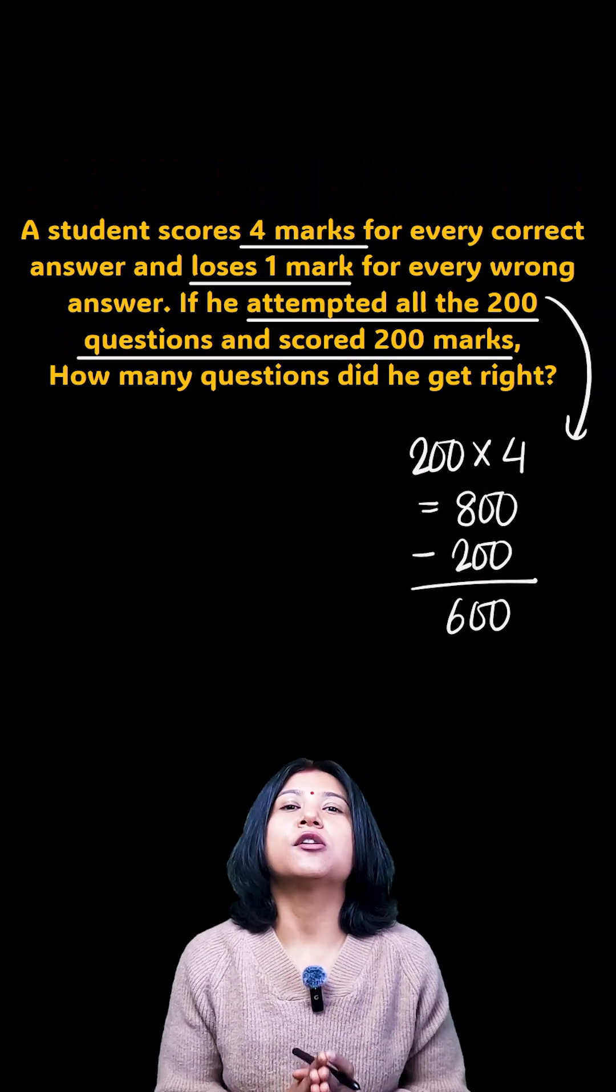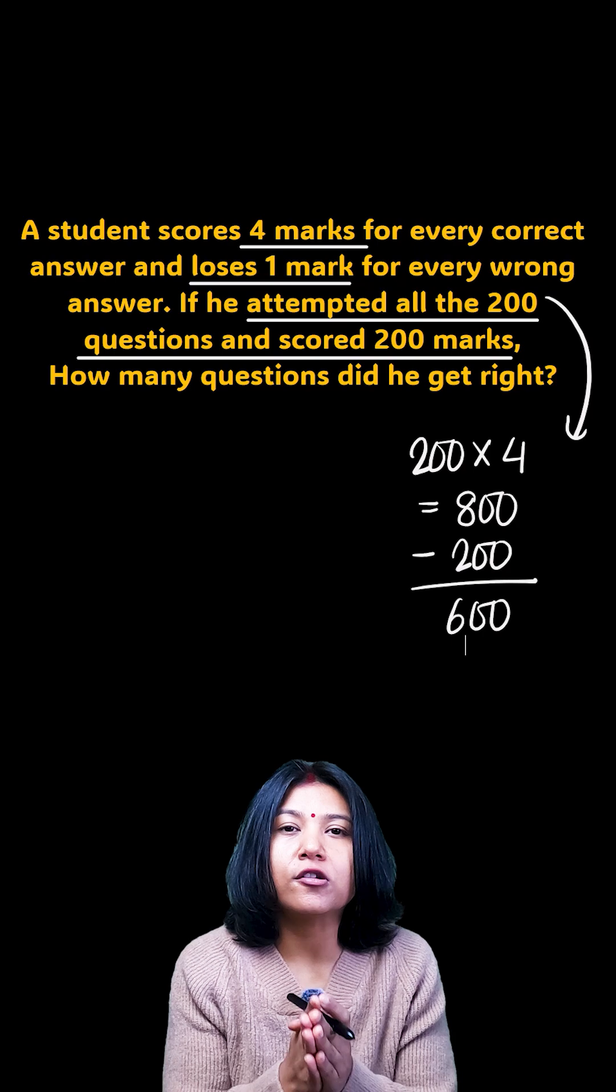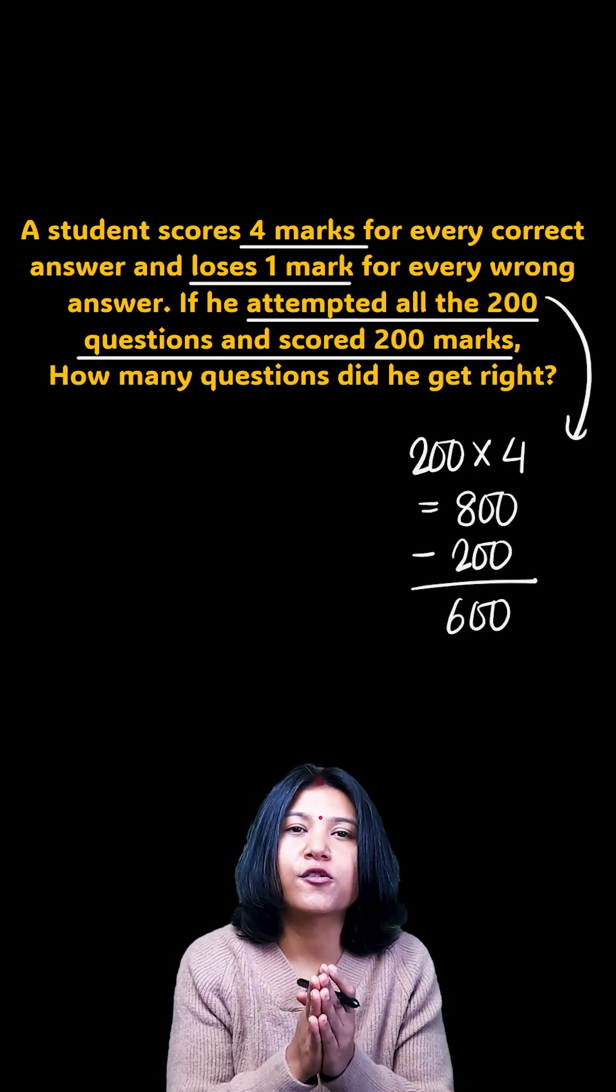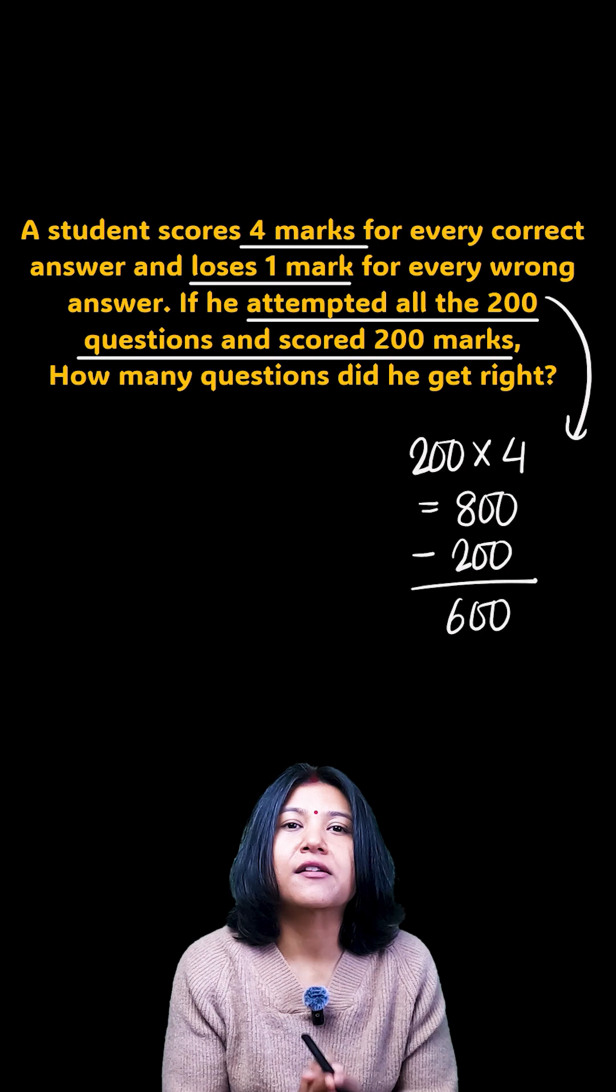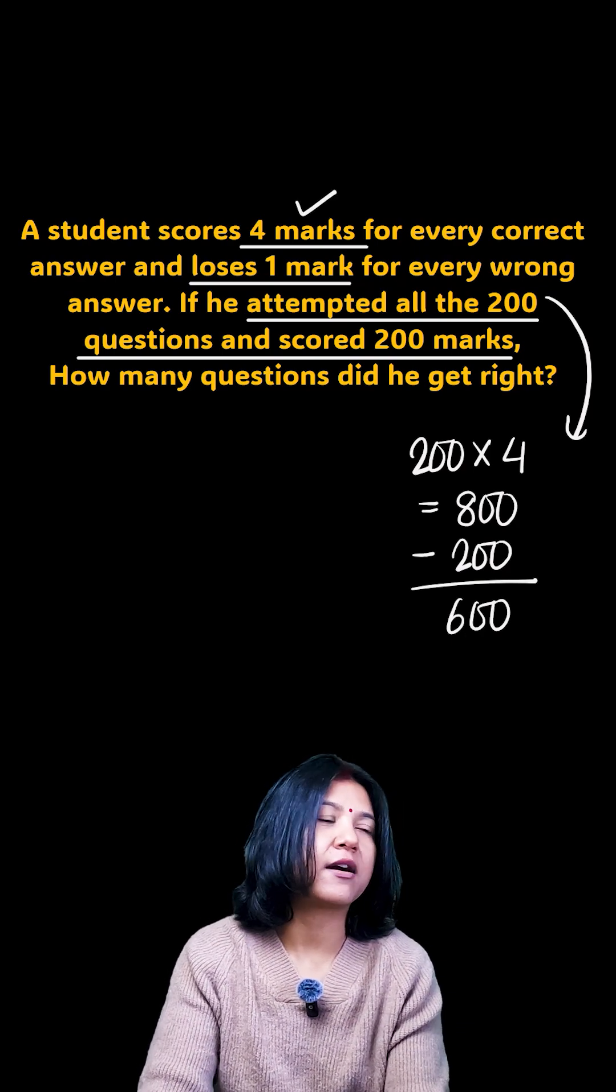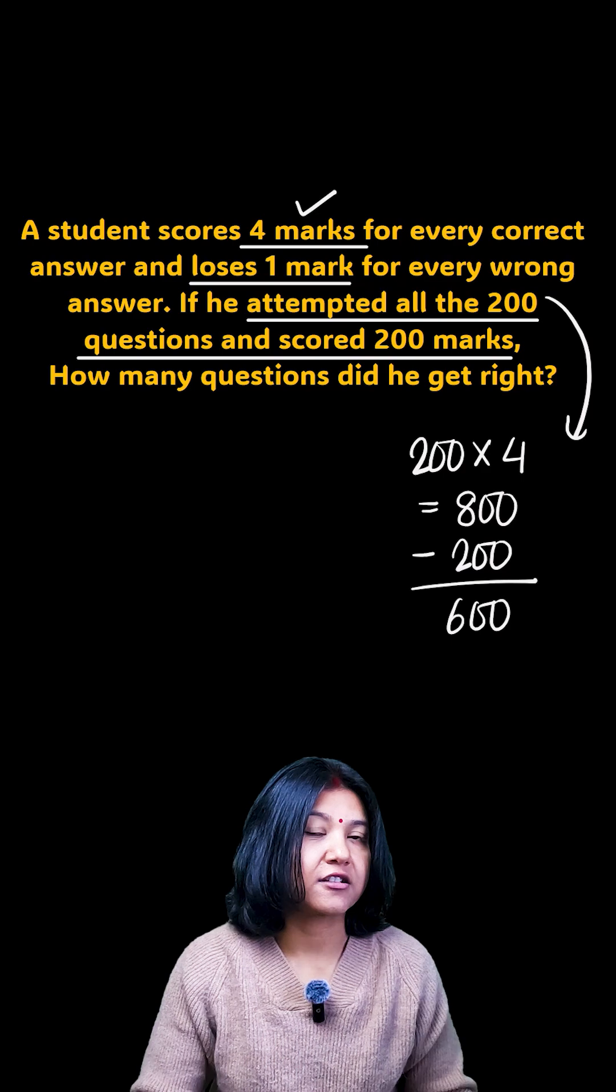Which means for every wrong question you are actually losing five marks. Okay, four marks you are losing already and one mark from the one that you have already got correct. So what we'll do is 600 is the marks you have lost.